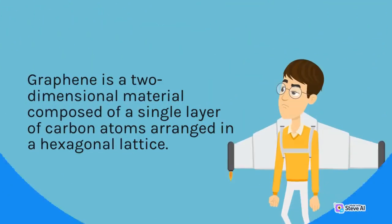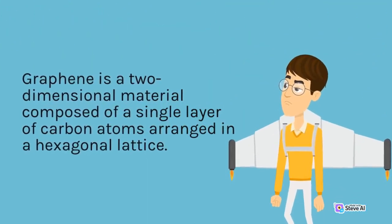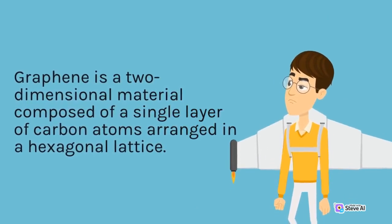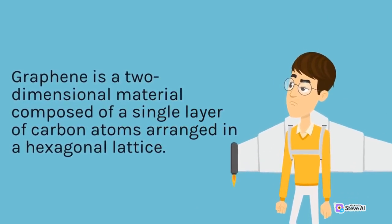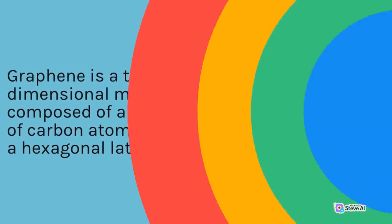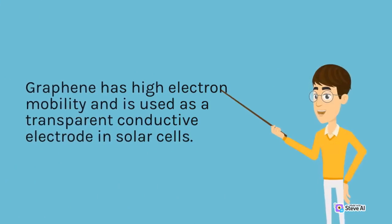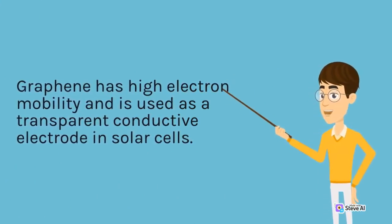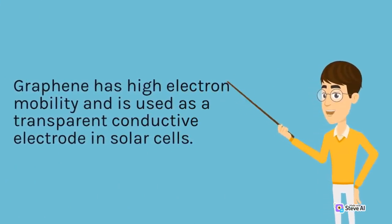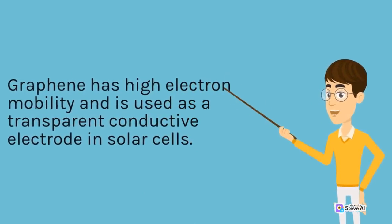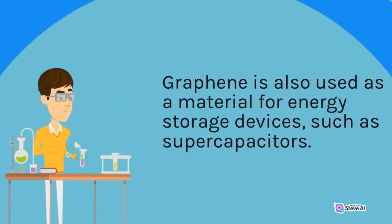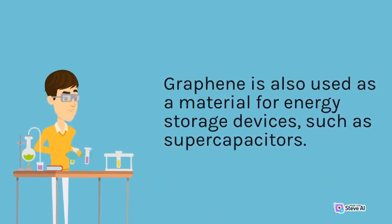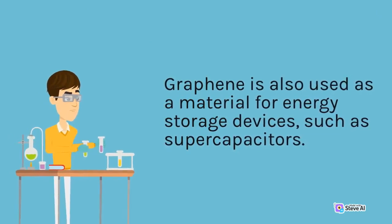Graphene is a two-dimensional material composed of a single layer of carbon atoms arranged in a hexagonal lattice. It has high electron mobility and is used as a transparent conductive electrode in solar cells. Graphene is also used as a material for energy storage devices, such as supercapacitors.